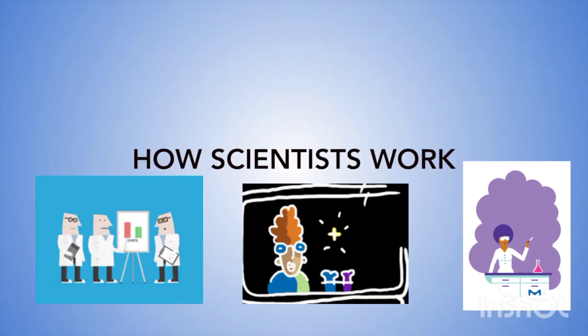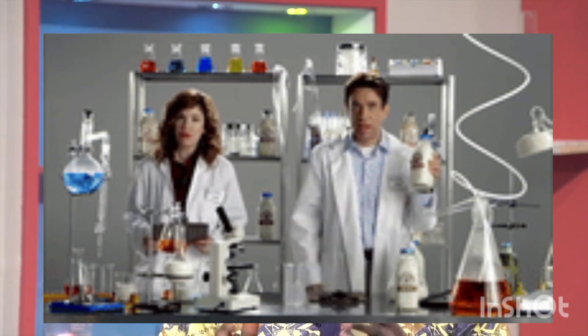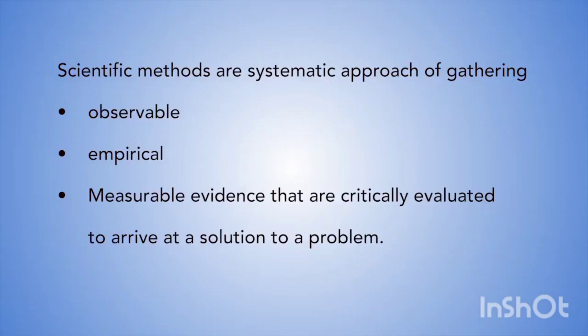Now let's focus on how scientists work. Conducting a scientific investigation or enquiry involves a series of steps, what we refer to as the scientific method. The scientific method is a systematic approach of gathering observable, empirical or measurable evidence that are critically evaluated to arrive at a solution to a problem.